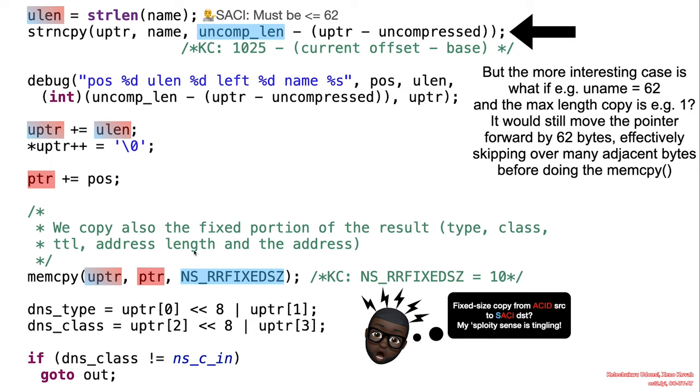All right, we're getting somewhere but there is still something even more interesting. Now, what if the length of this was, as an example we said earlier, what if it was 62 and if we just one, then we would advance the pointer an arbitrary 62 bytes into somewhere. And then we would then copy this fixed size 10 bytes from attacker control data into this arbitrary location where the pointer is now pointing to, effectively skipping over many adjacent bytes before doing the memcpy. This is why we have an out of bounds write.